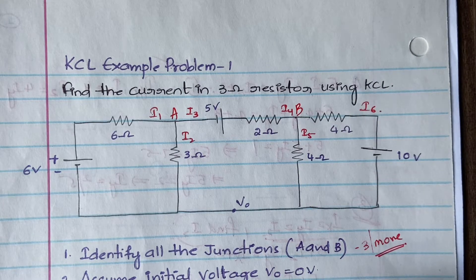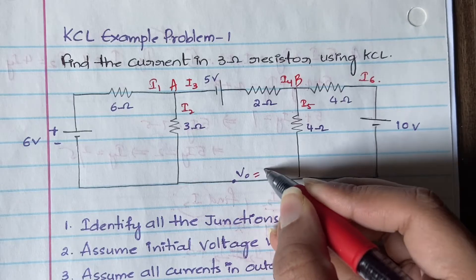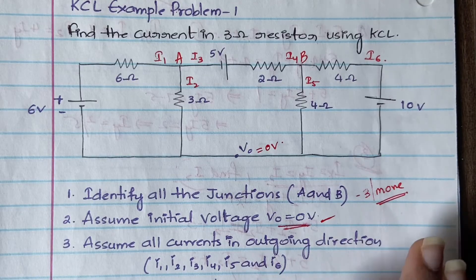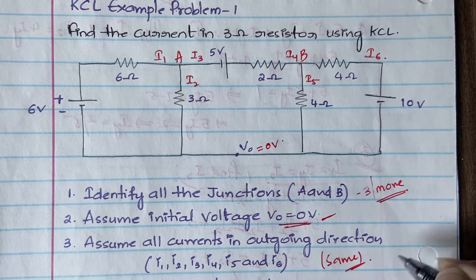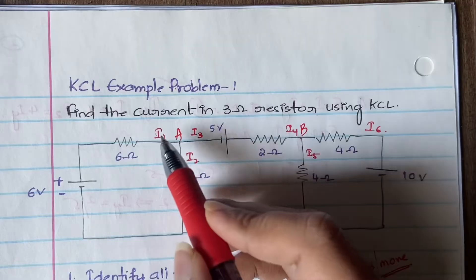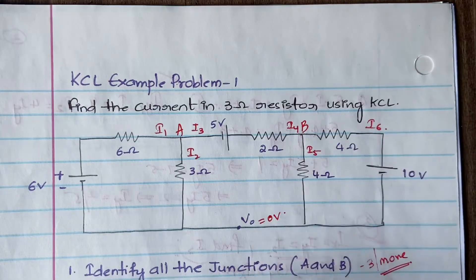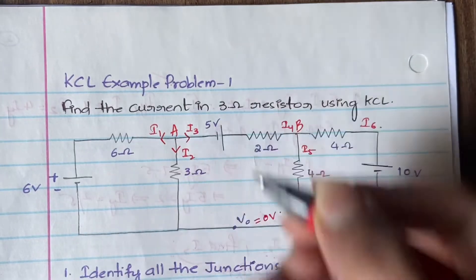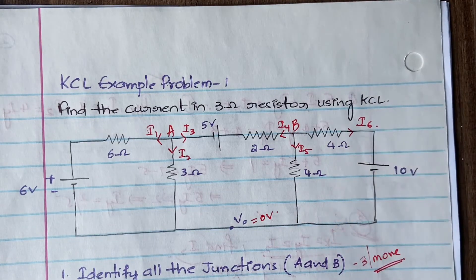Now we assume the initial voltage V₀ equal to zero volts. Next, assume all the unknown currents in the outgoing direction. It is always better to assume all unknown currents in the same direction, whether incoming or outgoing. So now we have i1, i2, i3 and i4, i5, i6. Assume all currents in the outgoing direction: i1 going out, i2 going out, i3 going out, i4 going out, i5 going out, and i6 going out.